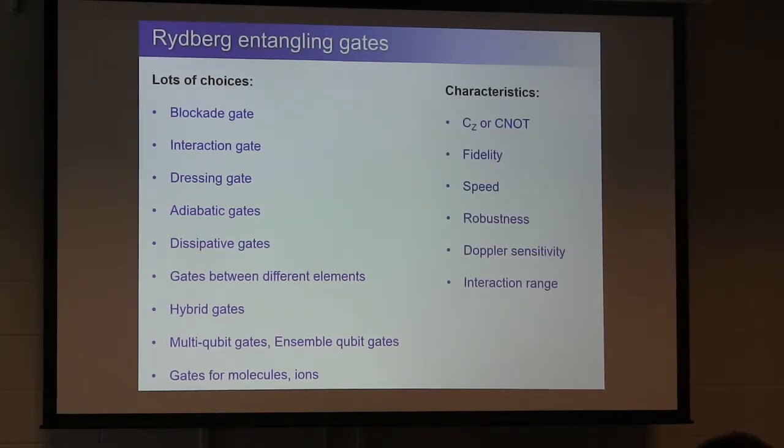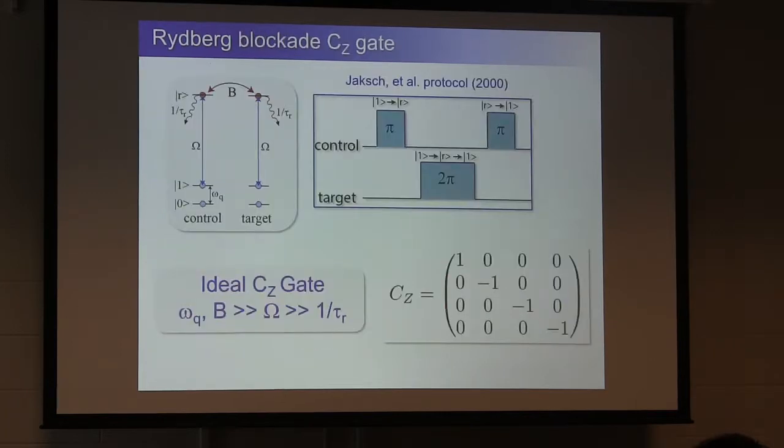You can do gates between different elements or different isotopes. Hybrid gates, for example, entangle a Rydberg atom with a photon or a superconducting qubit. There are gates that act on multiple qubits at one time, gates for the ensemble encodings, where multiple atoms are one qubit. And also Rydberg interactions from molecules and ions. So there's a long list there. And there's a lot of different characteristics these gates have, that one can think about. What kind of gate is it? Typically, with the Rydberg interaction, these are controlled Z or C-not gates. One could also do other interactions, but this is typically what all the gates have been. And we're concerned about fidelity, about speed, about the robustness with respect to various parameters. One of those being the Doppler sensitivity, how much atomic motion can we tolerate. And also, the interaction range, when I think about building up corrective codes and scaling and having a beyond-nearest neighbor range is a certain purpose.